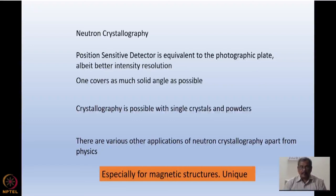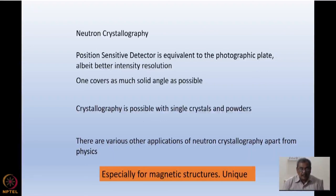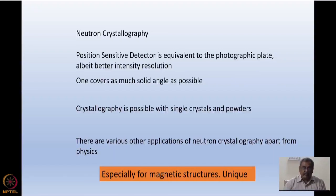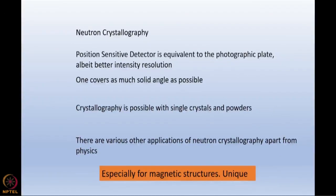Ab initio crystallography is possible with single crystals, not with powders. There are various applications of neutron crystallography apart from physics. I will also tell you how strains can be determined using neutron diffraction, specially neutron diffraction because neutrons can penetrate deep in industrial pieces of materials, which is not possible by any other radiation. Also, neutrons are unique for magnetic structure determination. We will discuss all those in the next lecture.